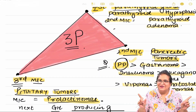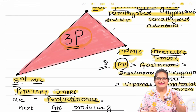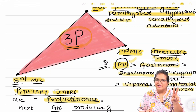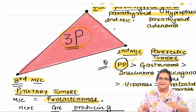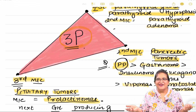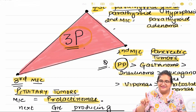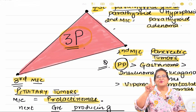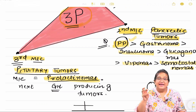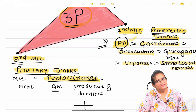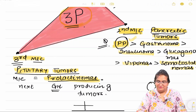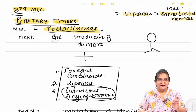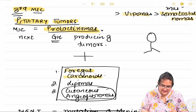So everyone repeat with me: MEN 1 is Wermer syndrome and it has three P's. The first P is parathyroid, the second P is pancreatic tumor, and the third P is pituitary tumor. In parathyroid: parathyroid hyperplasia is most common. In pancreatic tumor: pancreatic polypeptide is most common. In pituitary: prolactinomas are most common. Growth hormone-producing tumors may also occur, and acromegaly may occur.